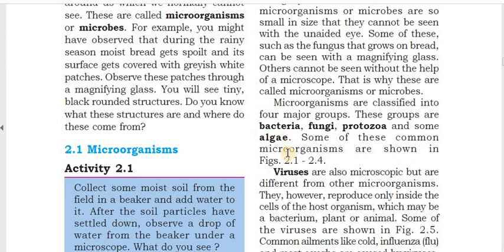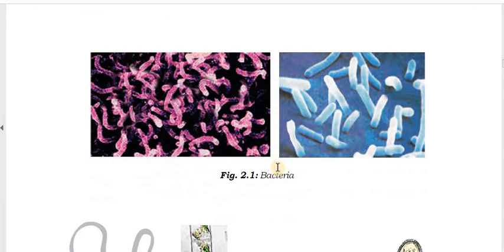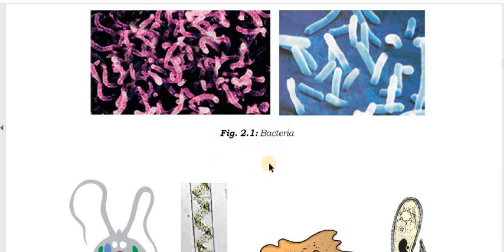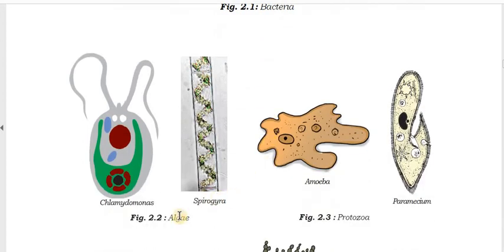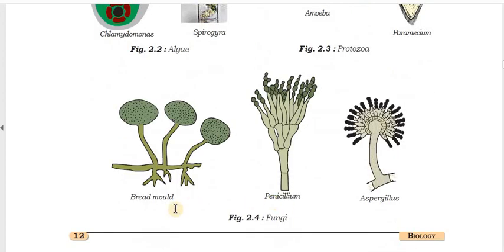Some of these common microorganisms are shown in figures 2.1 to 2.4. These are the bacteria. Chlamydomonas and Spirogyra belong to algae. Amoeba and Paramecium belong to protozoa. Bread mold, Penicillium, and Aspergillus belong to fungi.